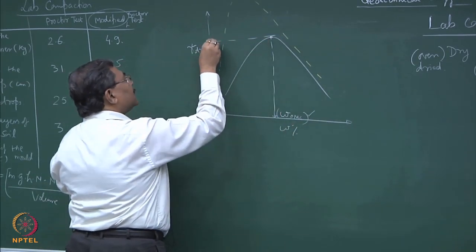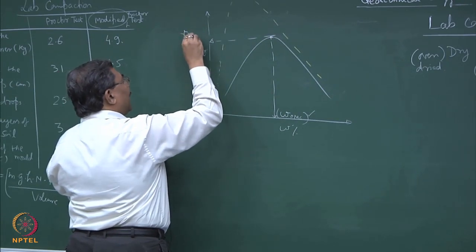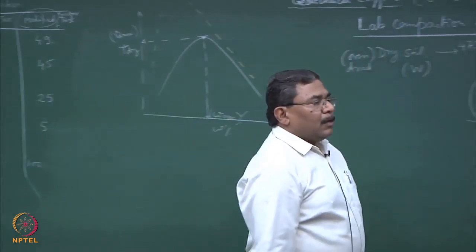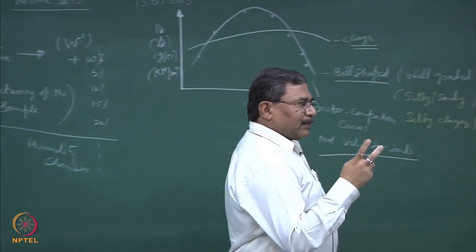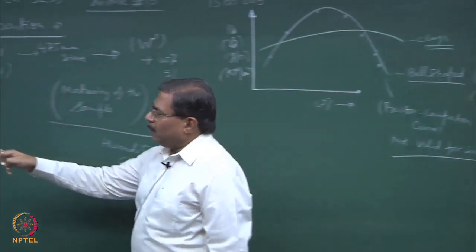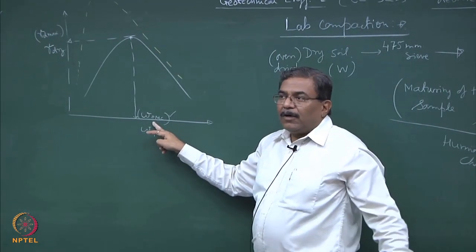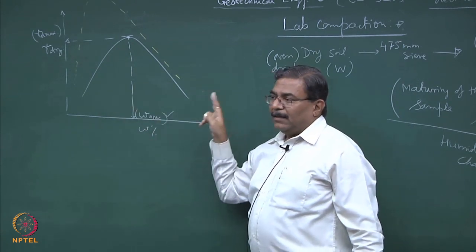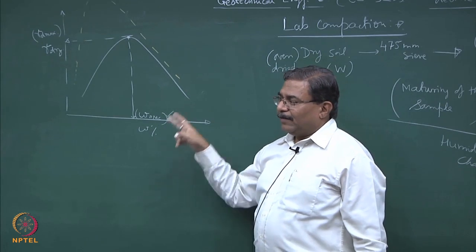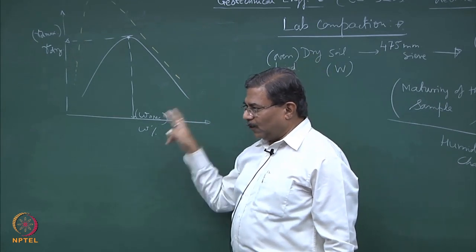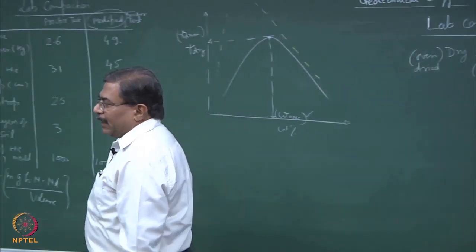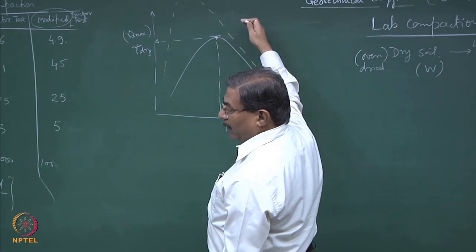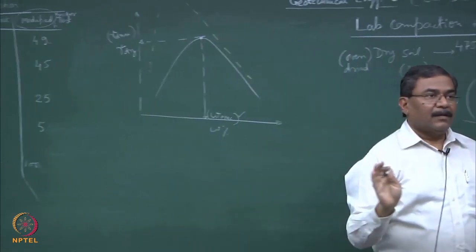This point is known as gamma d max. The moment I have described two parameters — gamma d max and WOMC — I need not bother about any further material properties, because these two are the characteristics of the material when it is exposed to external static loads. As an engineer, I am more interested in observing how soils are going to behave when exposed to external loading.